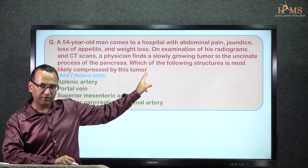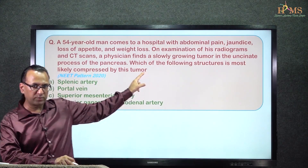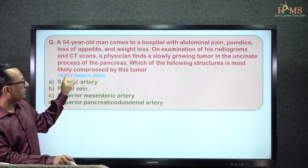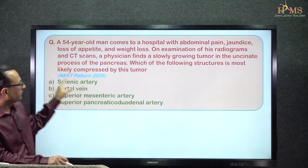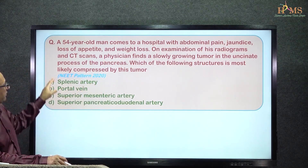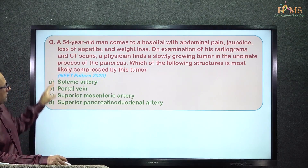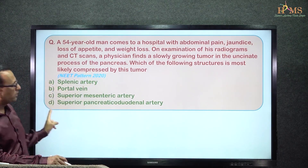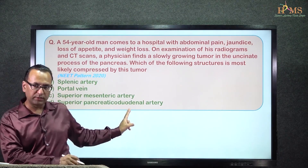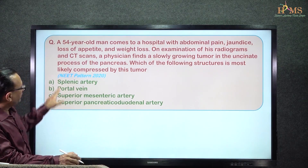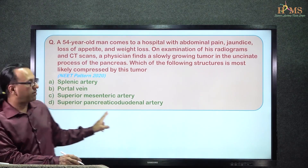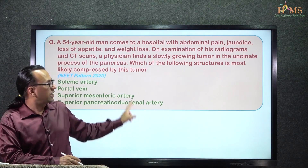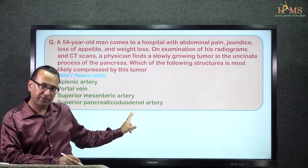We have an uncinate process of pancreas with a slow-growing tumor, and we need to find which vessel it compresses from the given options. To answer that, let us first look at the development of the uncinate process of the pancreas.